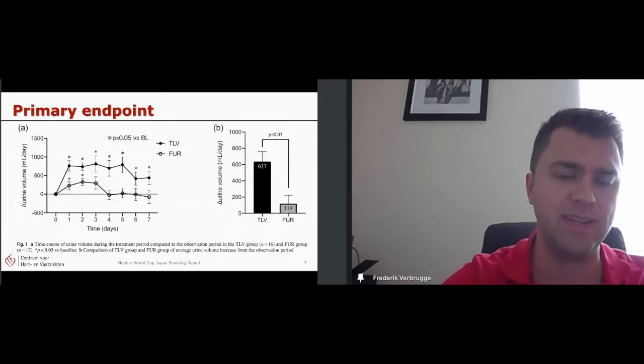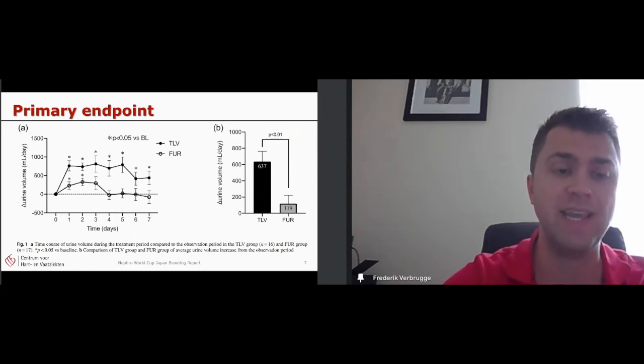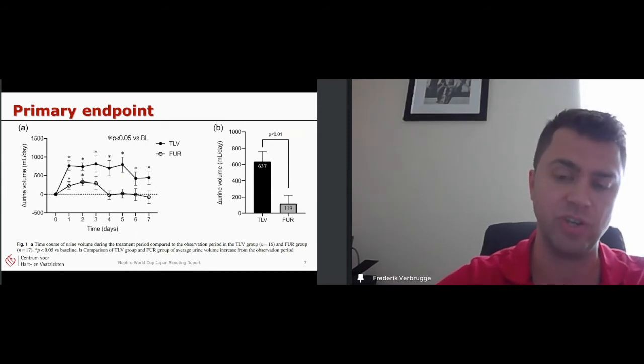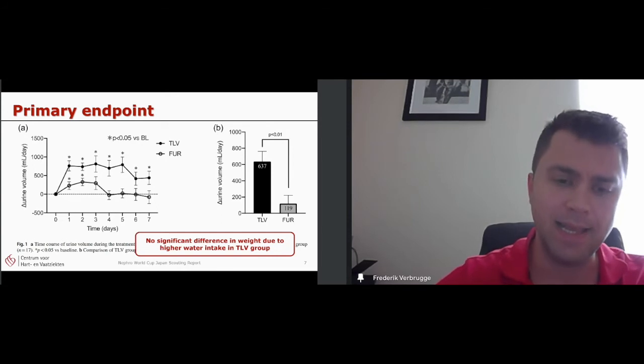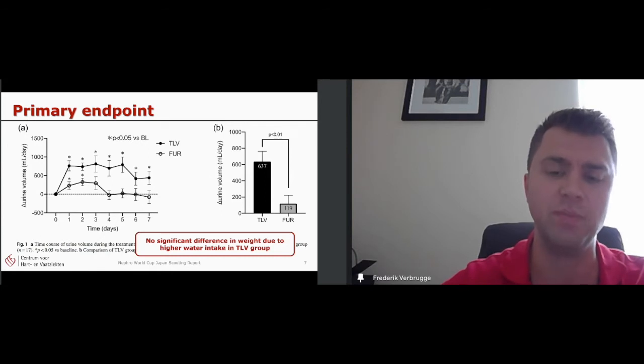When looking at the primary endpoint in this study, there was a clear increase in urine output in the Tolvaptan group compared to the furosemide group. Actually, during the first two days, there was a significant increase in both, but there was around half a liter more excretion of urine in the Tolvaptan group. So it was on average 637 versus 119 millilitre in the furosemide group. It is not clearly said what the water intake was in the article, but the weight is mentioned and there was no significant difference in weight difference between both groups. And this was probably because of a higher water intake in the Tolvaptan group, but the exact numbers are not presented in the manuscript.